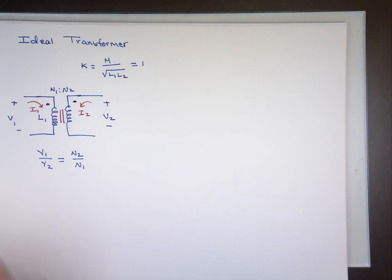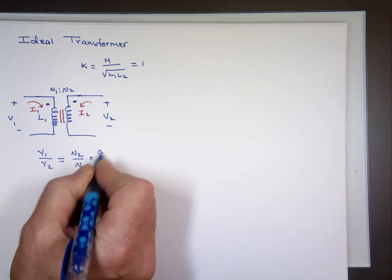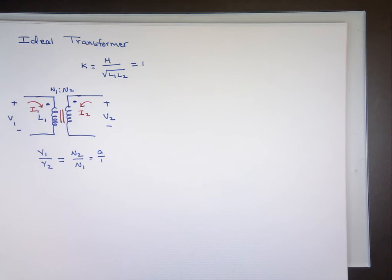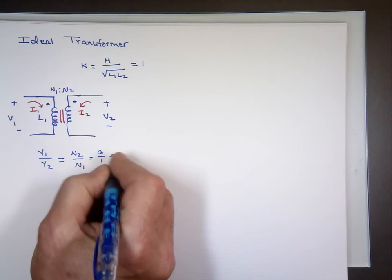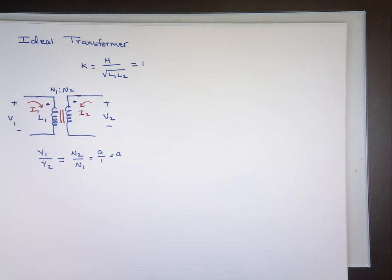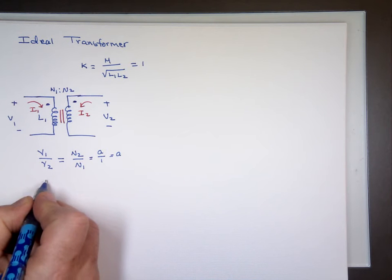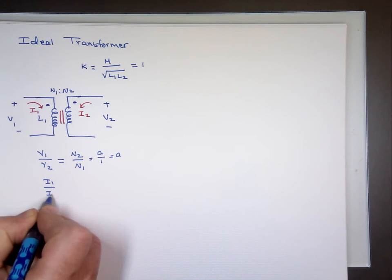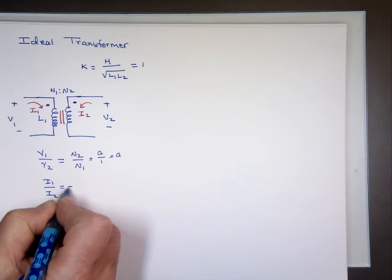Sometimes we define N2 over N1 as A — that's A to 1, which is A. So A is really N2 over N1. And the ratio of I-sub-1 to I-sub-2, when they're both entering the dot, is negative.